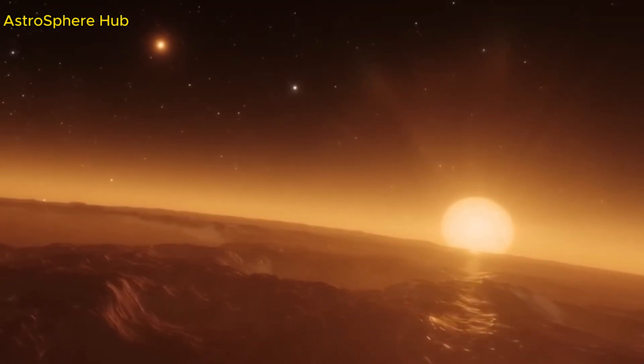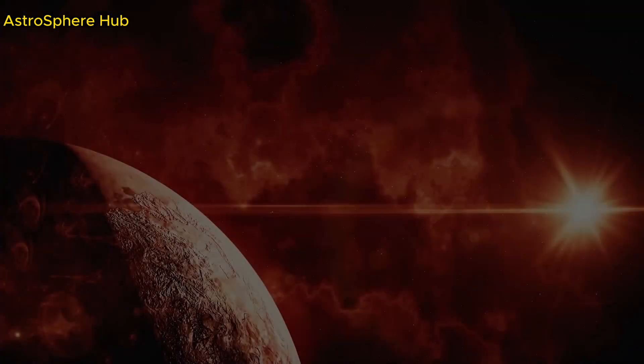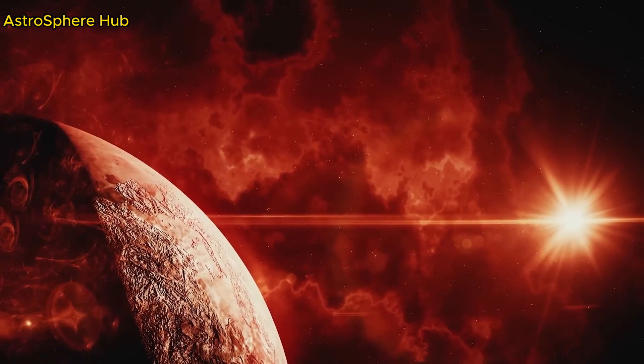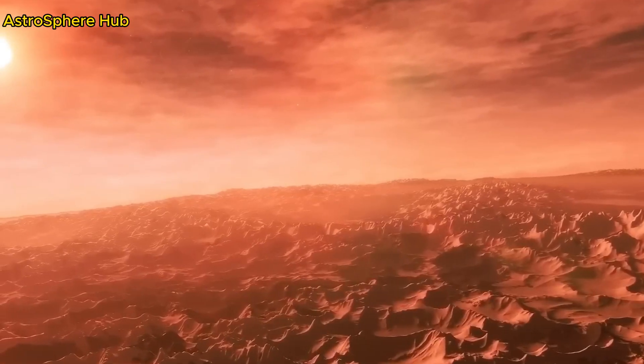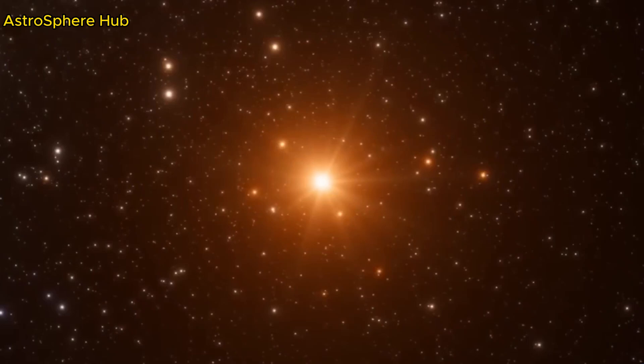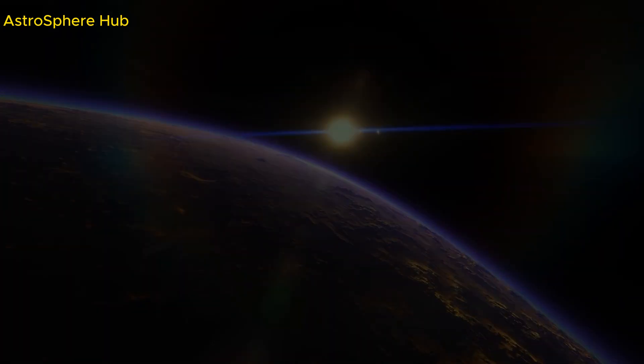Located just on the inner edge of the habitable zone, the planet's temperature without an atmosphere would be about 48 degrees Fahrenheit, 9 degrees Celsius. To compare, if there were no greenhouse effect on Earth, the surface temperature would be freezing, about 0 degrees Fahrenheit, -17.5 degrees C.